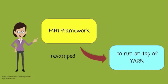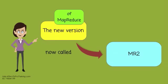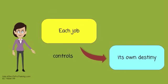The old MR1 framework have been revamped to run on top of Yarn. The new version of MapReduce is called MR2. In this new world, each job controls its own destiny.